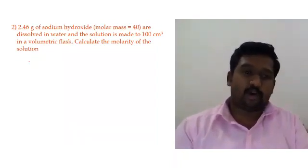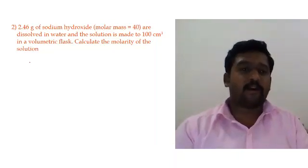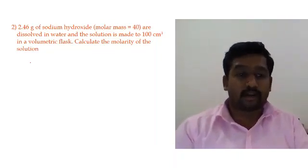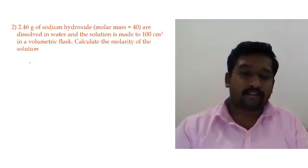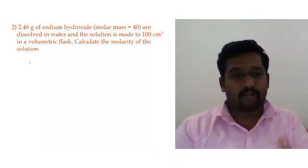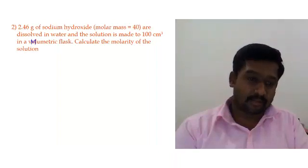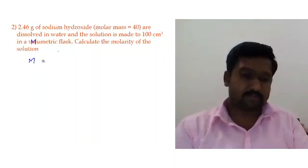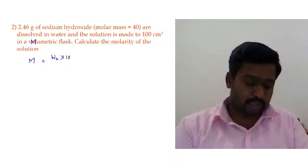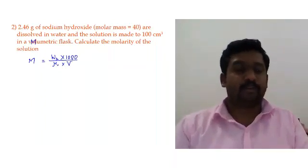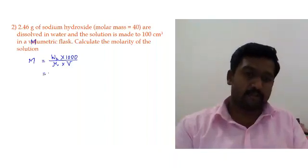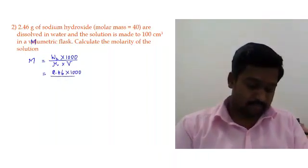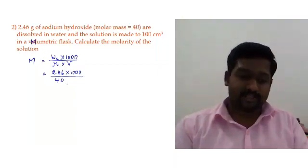Problem 2: 2.46 grams of sodium hydroxide with molecular mass 40 are dissolved in water and the solution is made to 100 cm³ in a volumetric flask. Calculate the molarity of the solution. The formula to calculate molarity is: M = w₂ × 1000 / (M_u2 × V), where M_u is the molecular mass. Substituting: w₂ = 2.46, into 1000, divided by molecular mass 40.